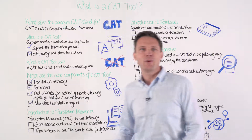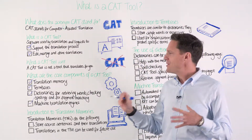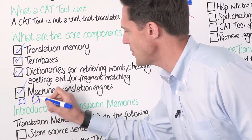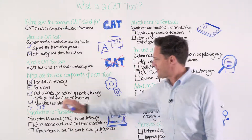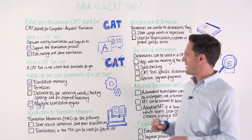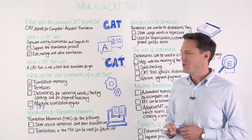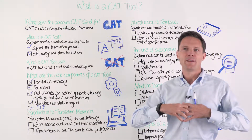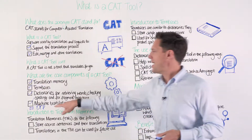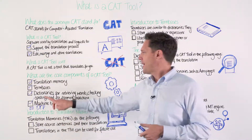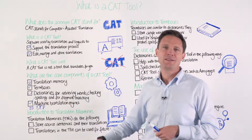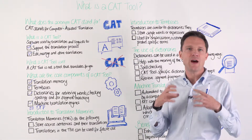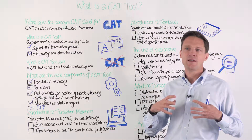There's one more thing I haven't put here on the board, which I think is important — I'm going to add a little box, which I'm going to call DTP. A CAT tool also enables you to open a lot of different files. This is another acronym: desktop publishing, DTP. You don't have to do a lot of work around the file itself, so you can take a PowerPoint, you can take a Word file, you can take HTML.